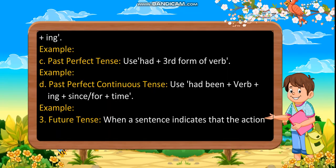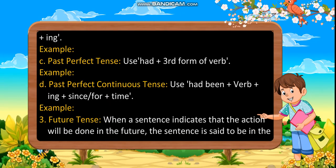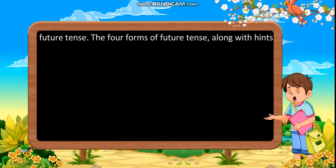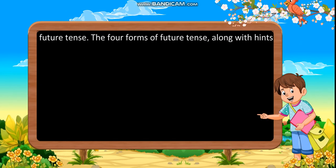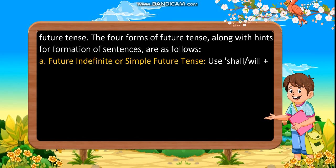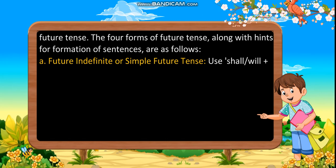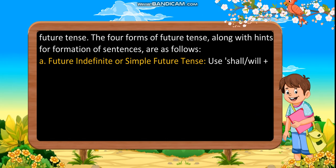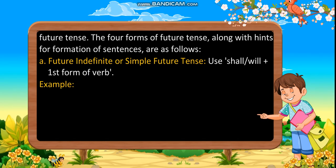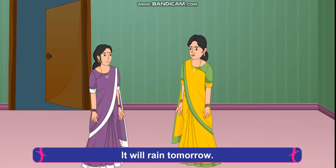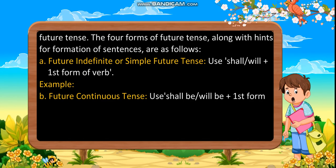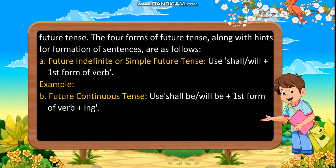Future tense: When a sentence indicates that the action will be done in the future, the sentence is said to be in the future tense. The four forms of future tense, along with hints for formation of sentences, are as follows. Future indefinite or simple future tense: Use shall or will plus the first form of verb. Example: It will rain tomorrow.